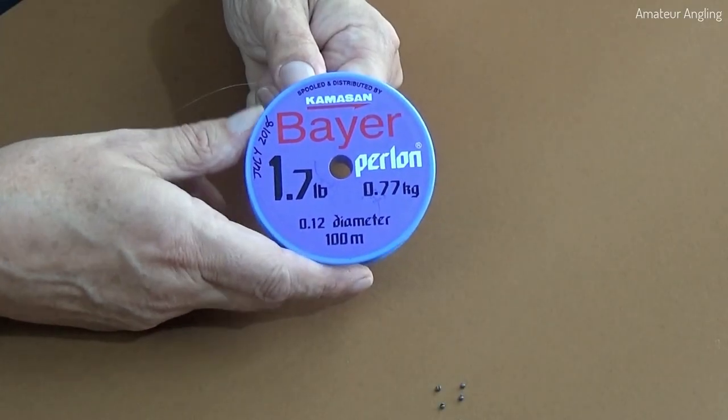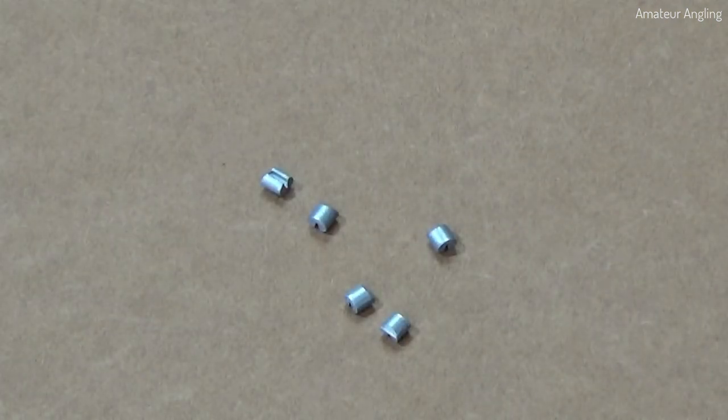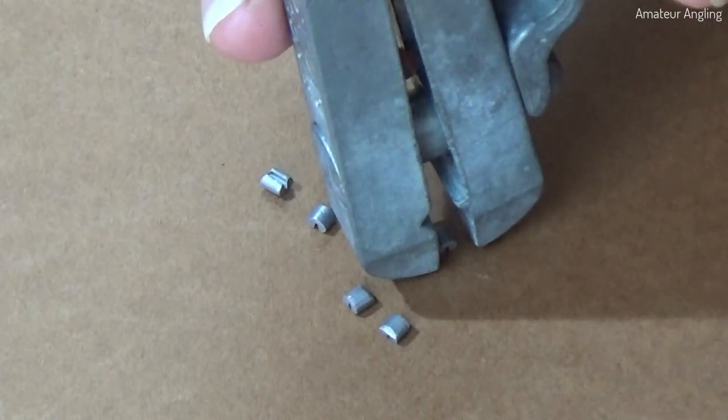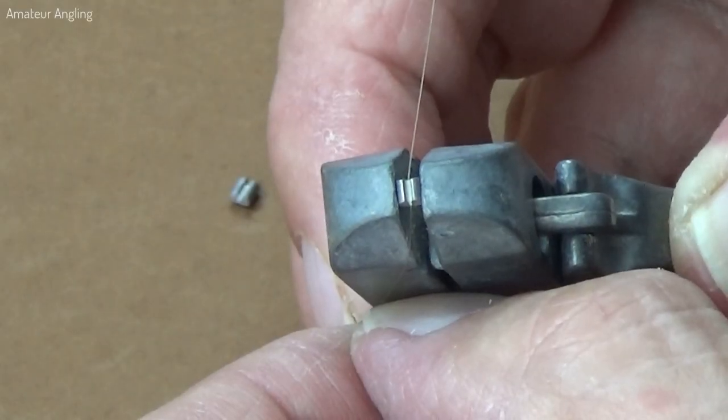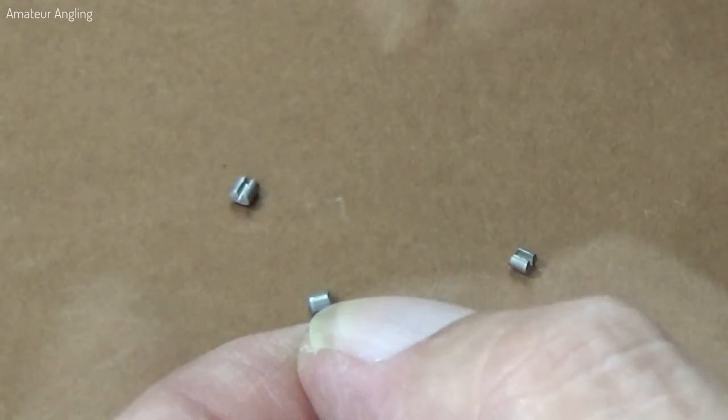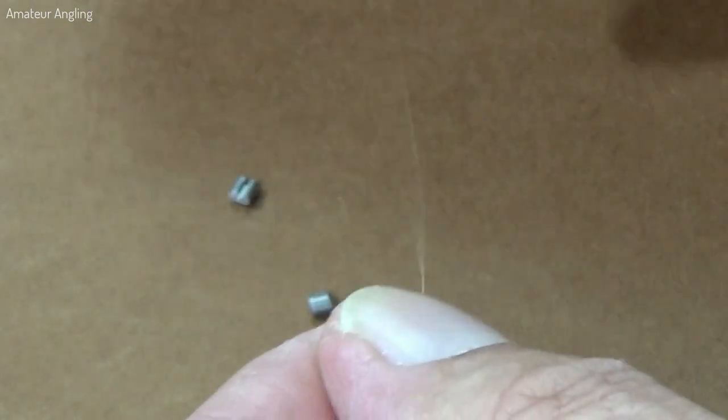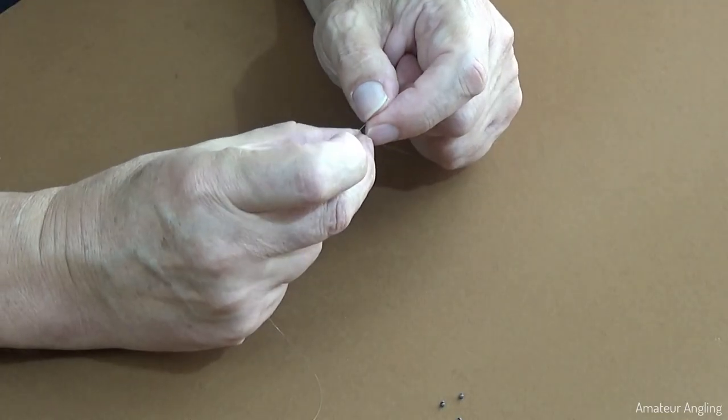On lighter lines and hook links, I'll either use standard micro shots or shot stops. Stops are designed not to damage the line - pick up and gently close them with a stotter tool. I find that they do so little damage to the line that I feel safe to use them directly on a hook link.